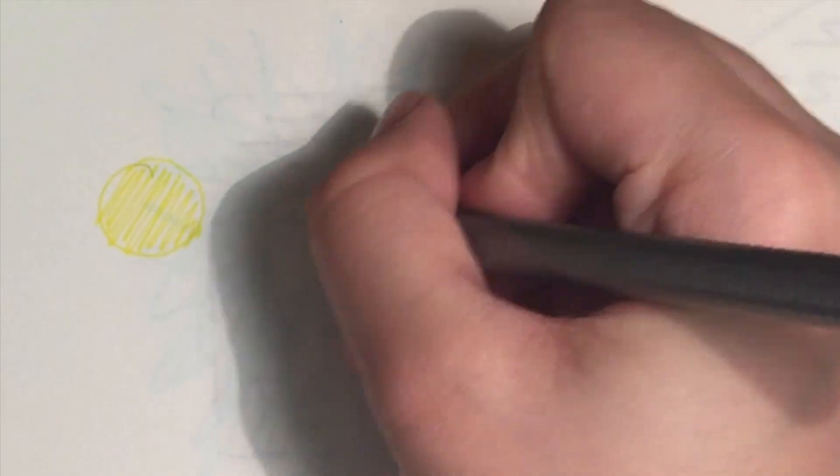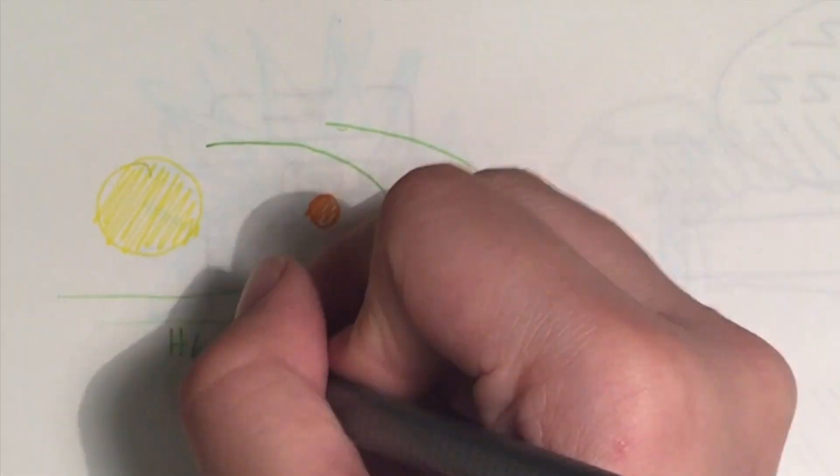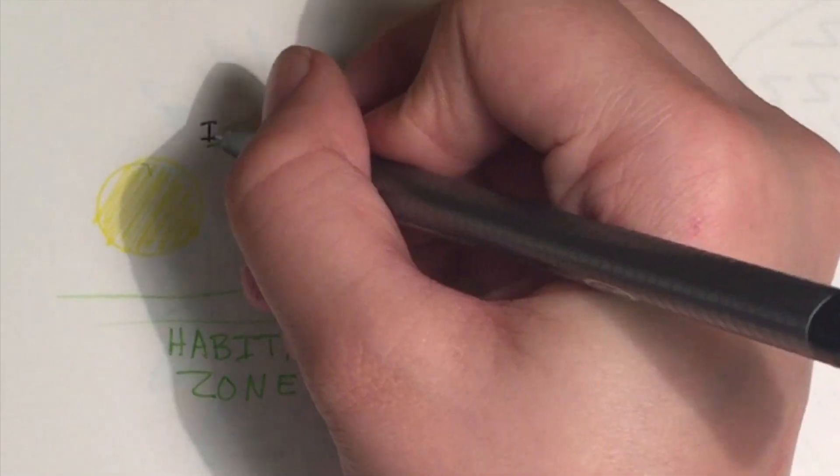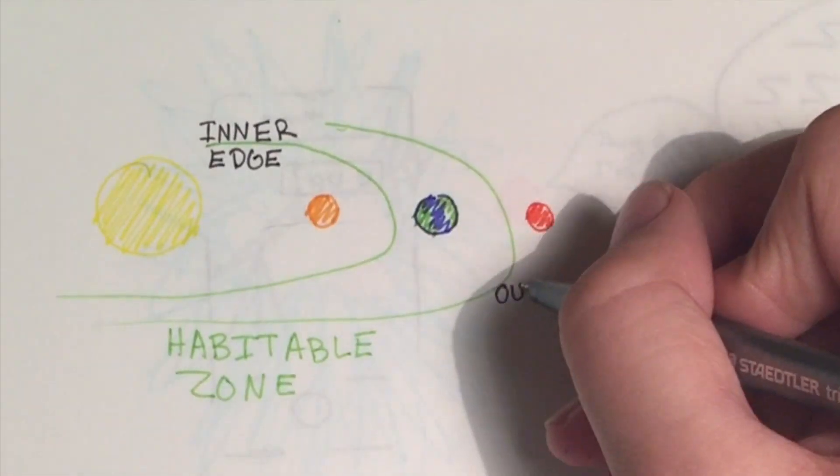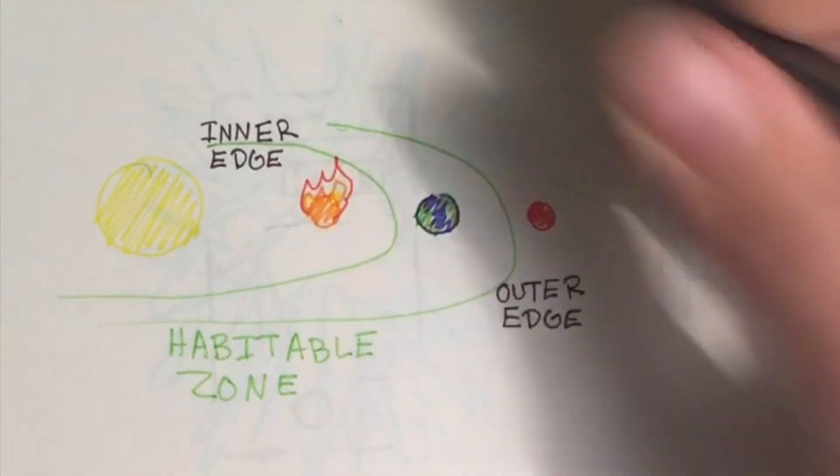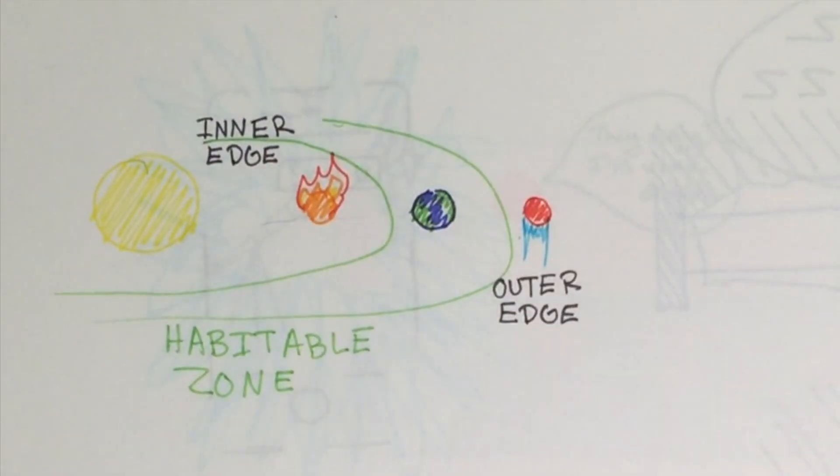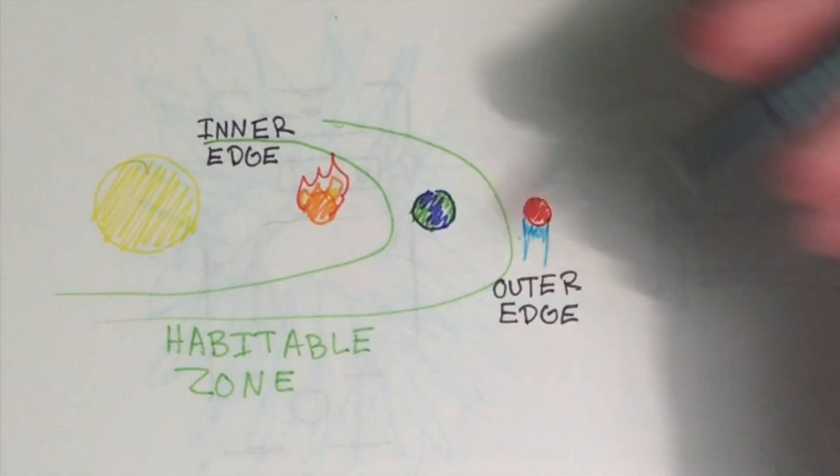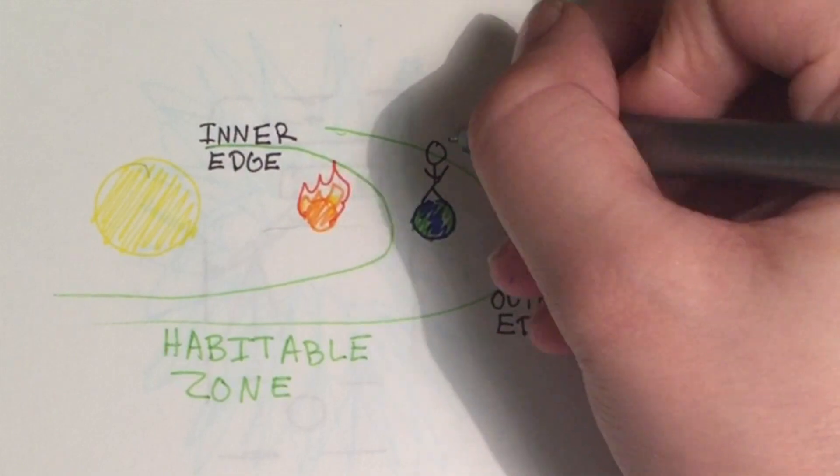We take the distance at which the water on the surface will boil off completely in a runaway greenhouse effect and call this the inner edge of the habitable zone, and we take the distance at which, even with greenhouse gases, it would be so cold that water would barely remain a liquid and call this the outer edge. Venus just so happens to lie at the inner edge, Mars at the outer edge, and Earth snugly somewhere in the middle.